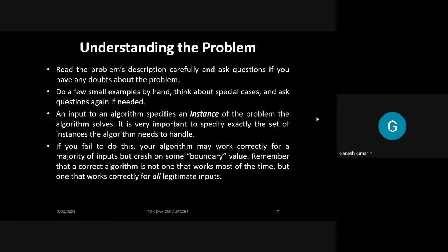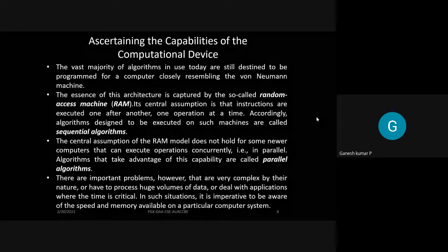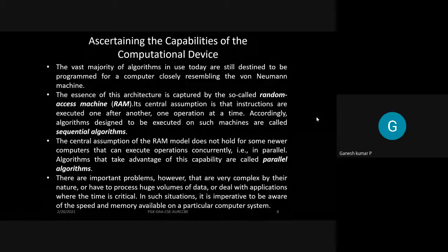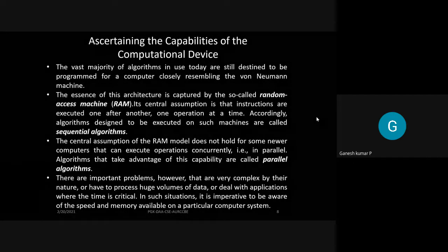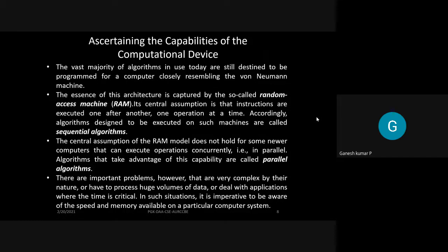Failures can arise from range constraints or illegitimate inputs. You must understand where previous attempts failed and ensure this problem is solved correctly. After understanding the problem, decide on the required computer hardware and software. The computational capability is based on RAM, ROM, or CPU processing speed.